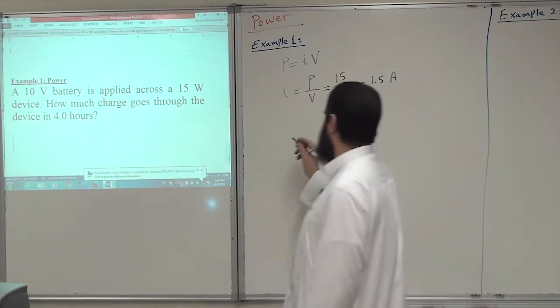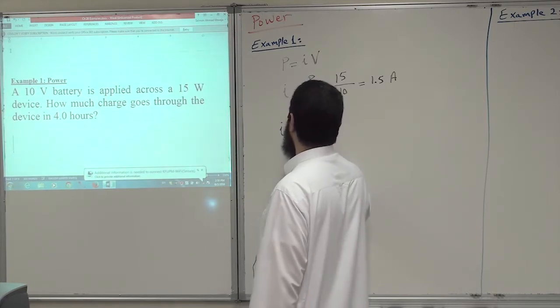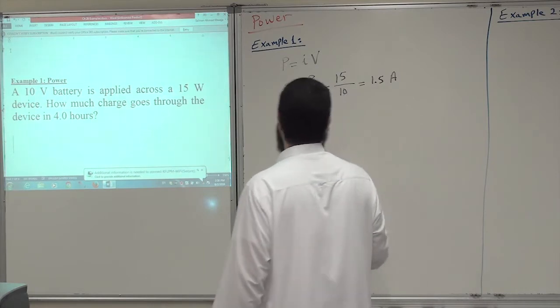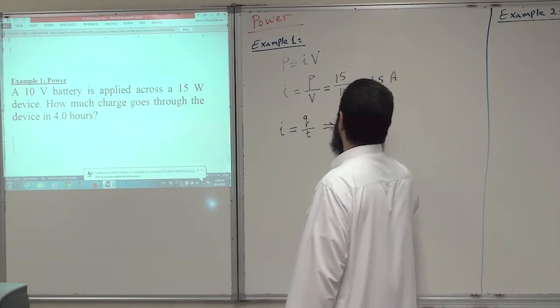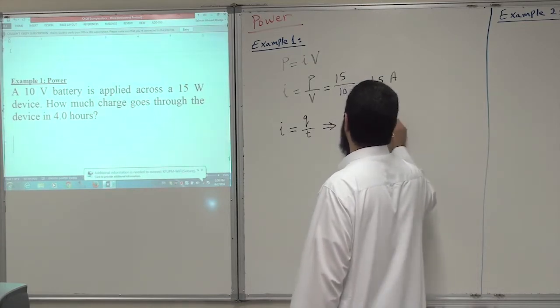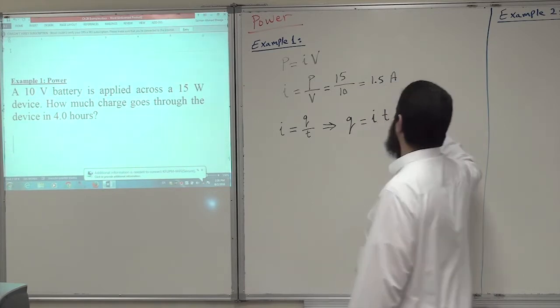How much charge? There is another definition of current: current equals dQ by dt. So we want to know how much is the charge. This implies that Q equals I multiplied by t. The current is 1.5 amperes.